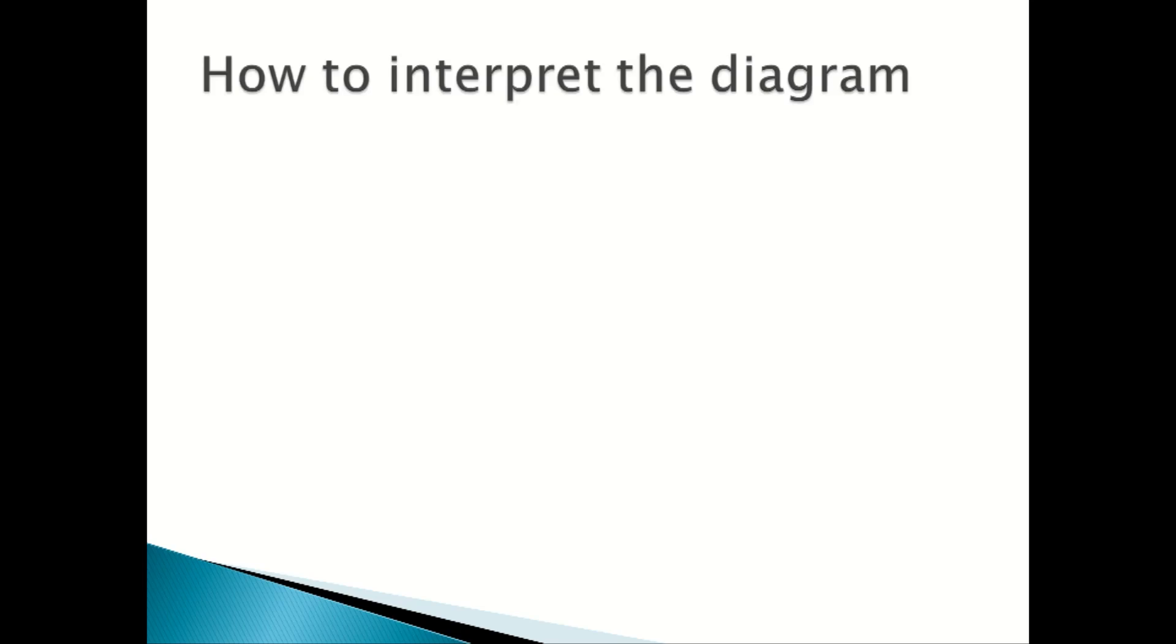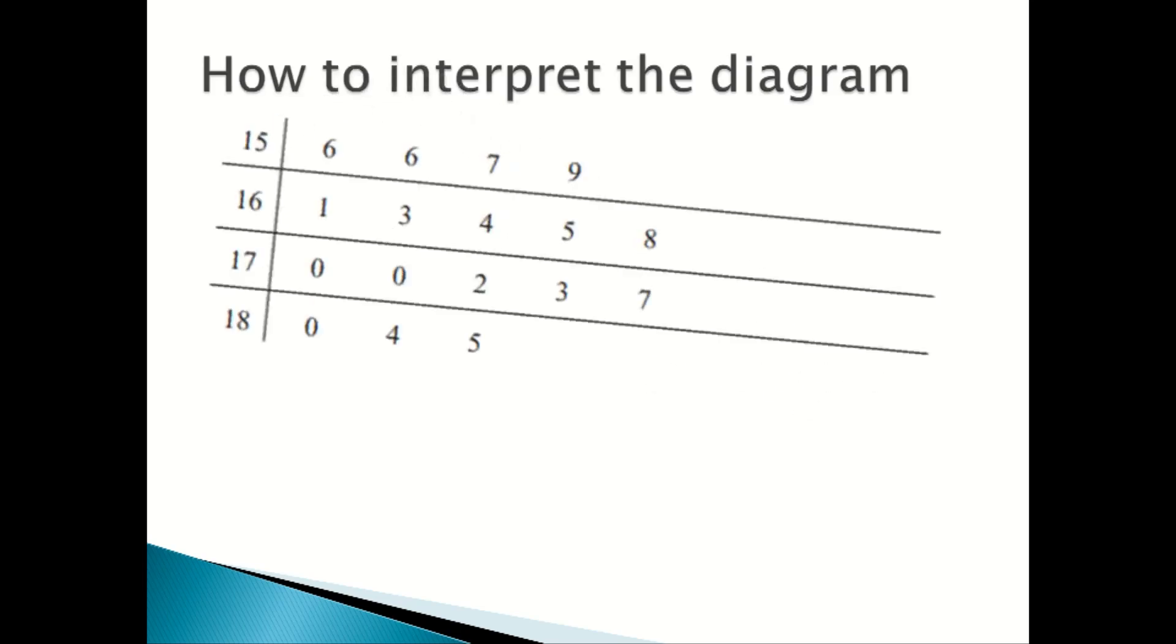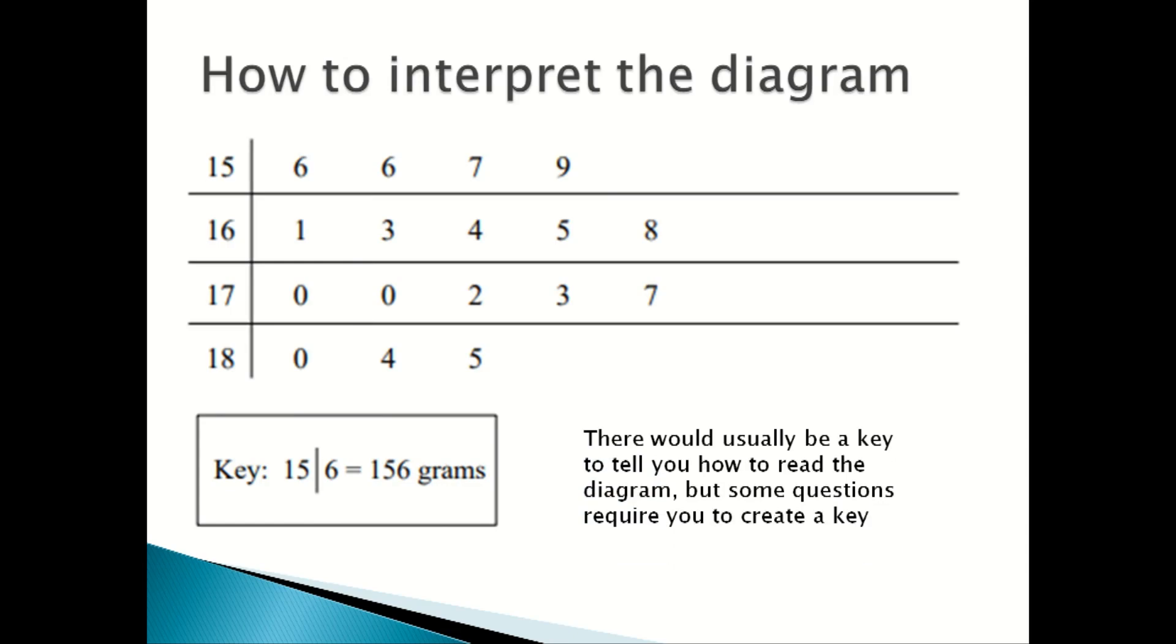How to interpret the diagram. There would usually be a key to tell you how to read the diagram, but some questions require you to create a key. For example, in this stem and leaf diagram you wouldn't really understand how to read it because you see 15 and then a line and then 6, 6, 7, 9, but from the key you can tell that the 15 and 6 when you merge them together becomes 156 grams.